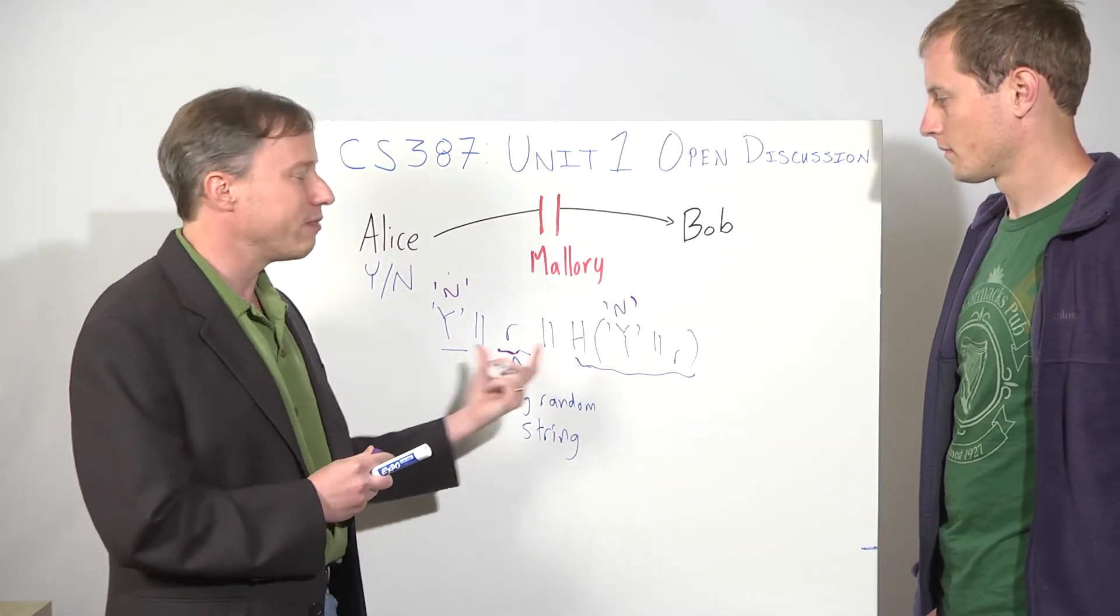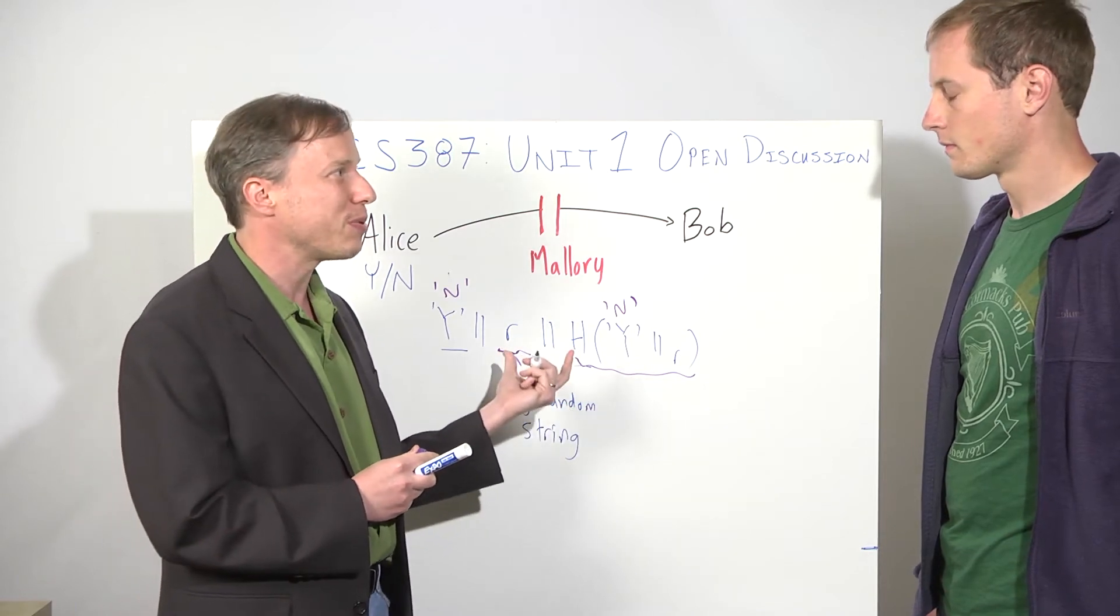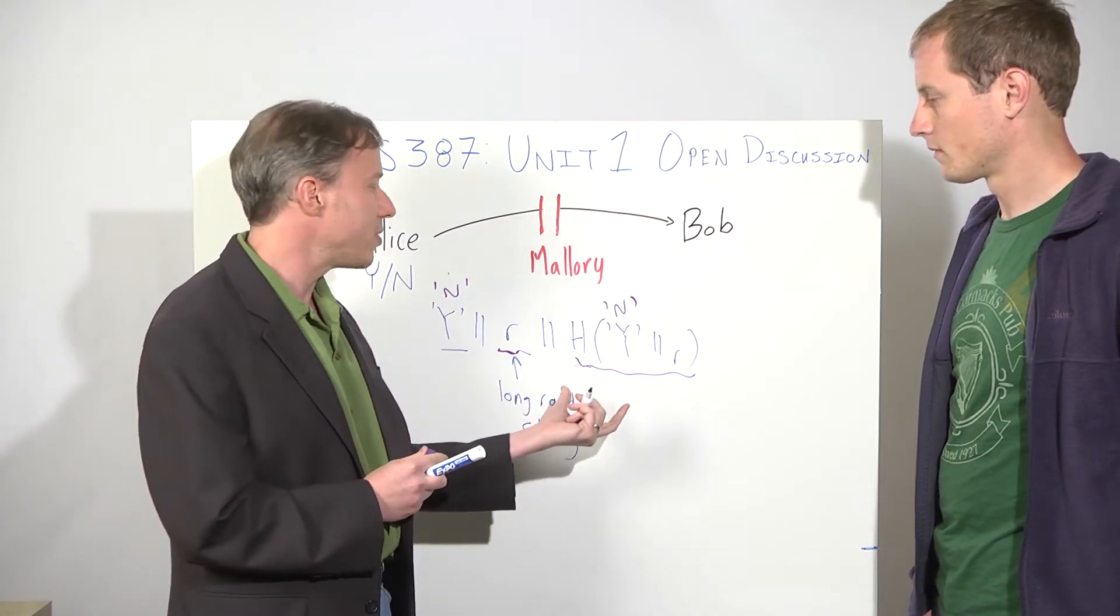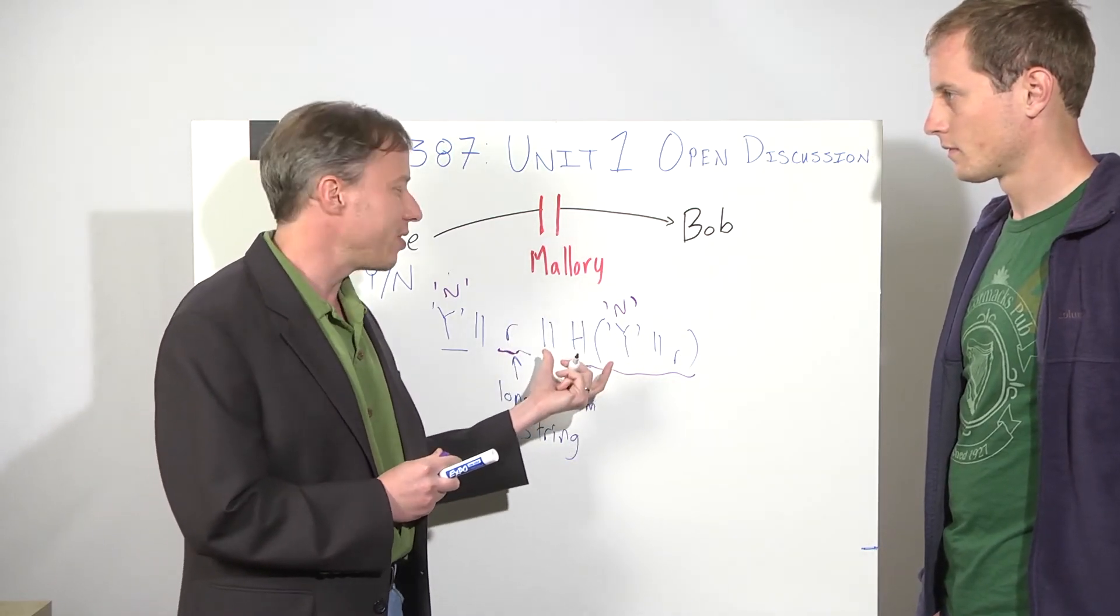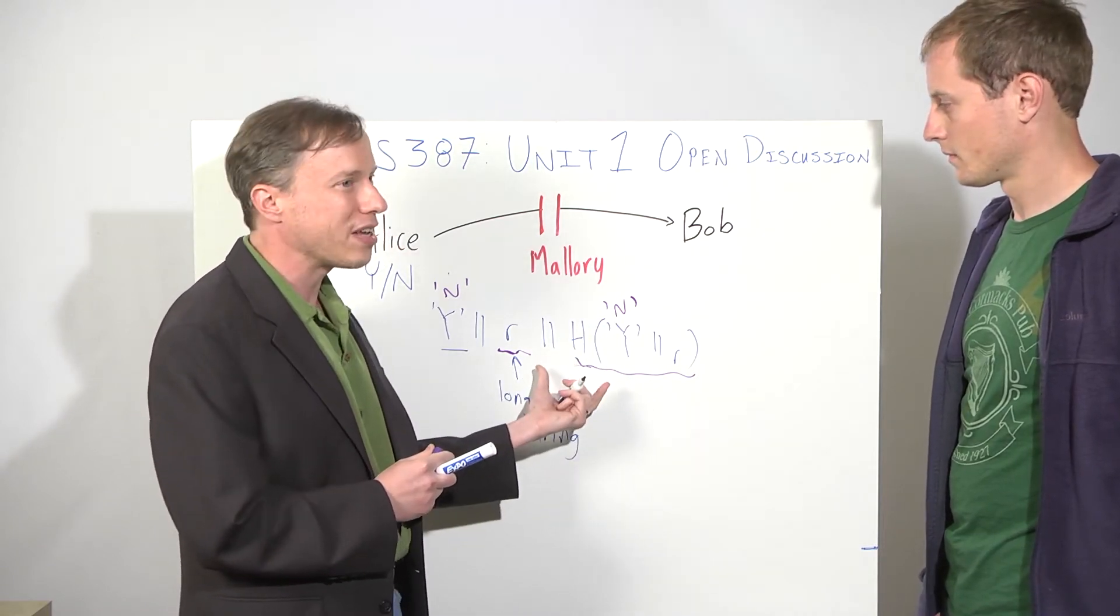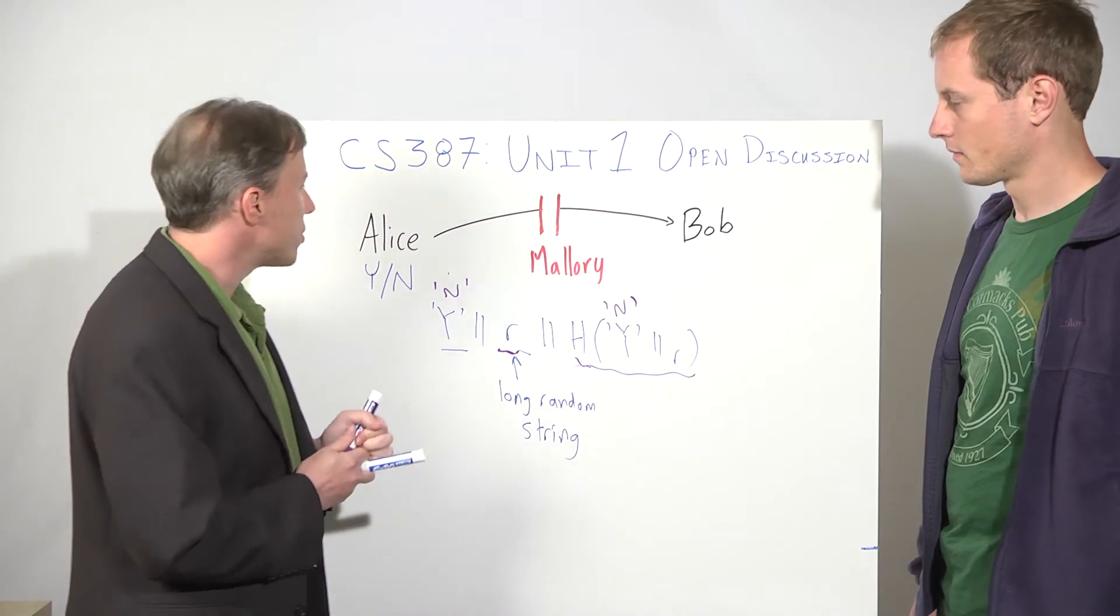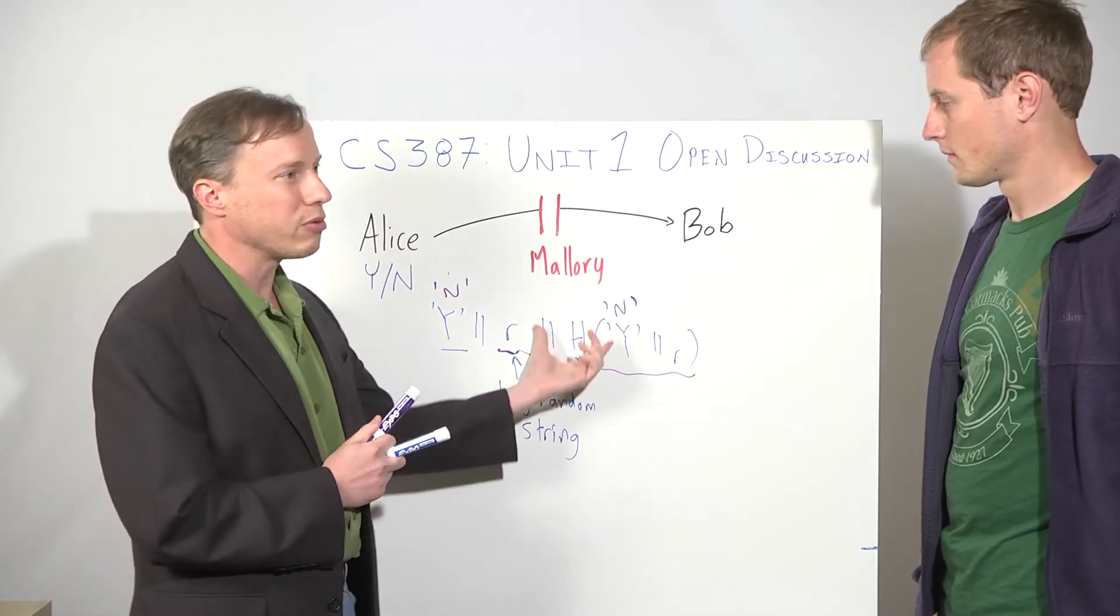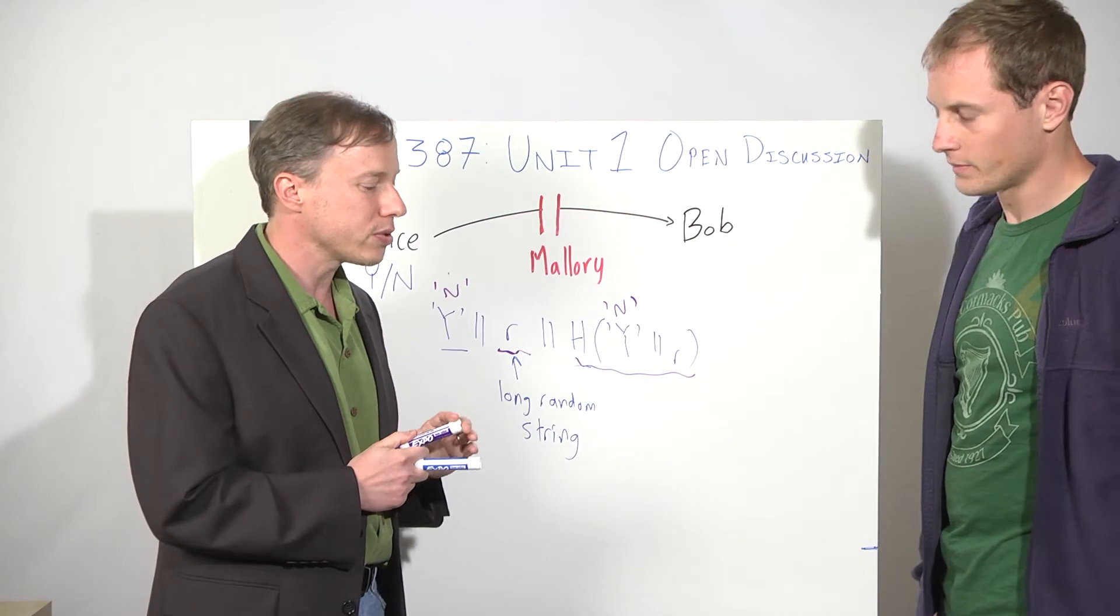The difficulty with the solution is, well, it involves cryptographic tools that are much more complex than just XOR. Hash functions are things we'll talk about in the next unit, but involve a fair amount of computation. It's not something you can easily do by hand. What we want is some solution that would allow Alice and Bob to do this without using any more advanced cryptographic tools.